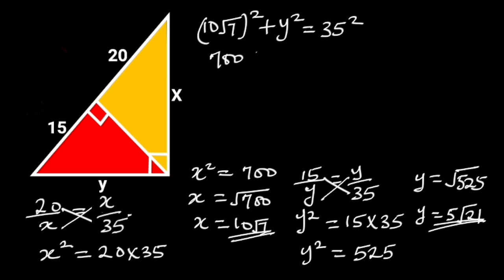10 root 7 squared is 700, and 35 squared is 1225.